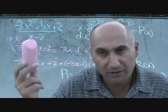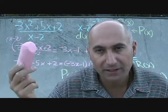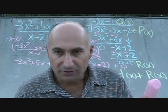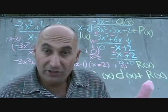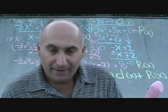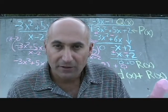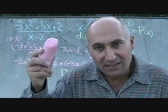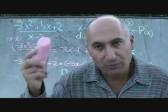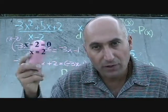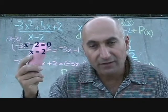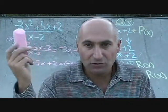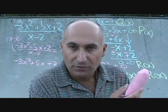We're going to do a more complicated version of this — a longer one where the remainder does not equal zero and where we'll have a non-zero R of x. That R of x will be the value you get when you set the divisor equal to zero, solve for x, and substitute that x value back into the original polynomial.